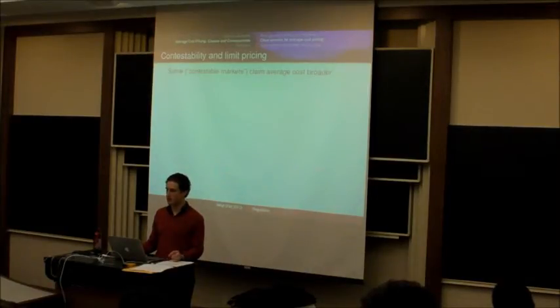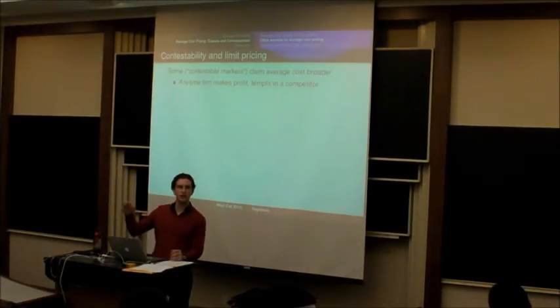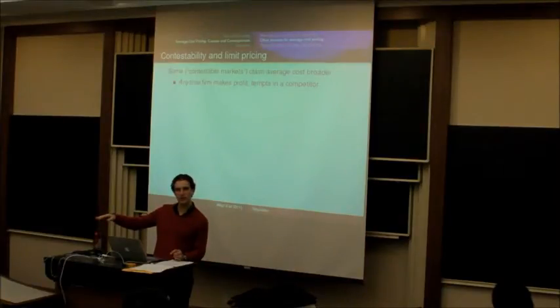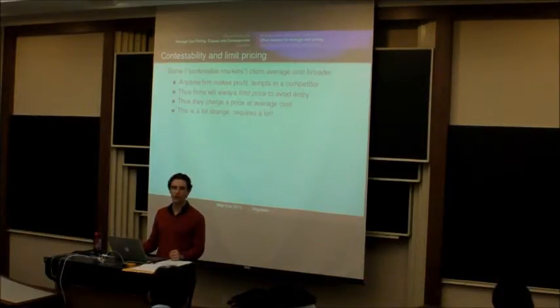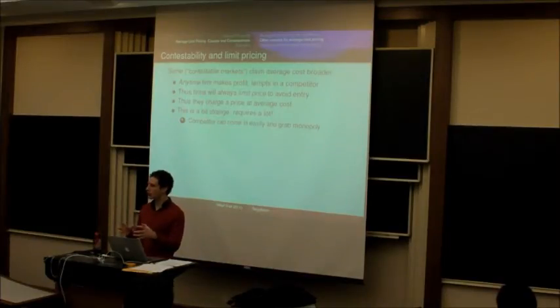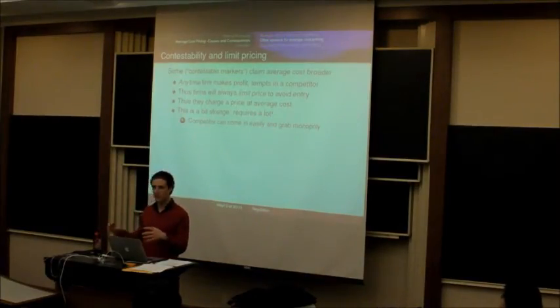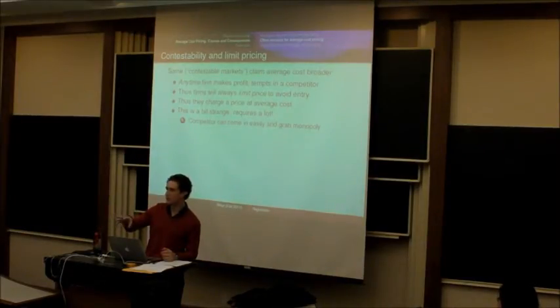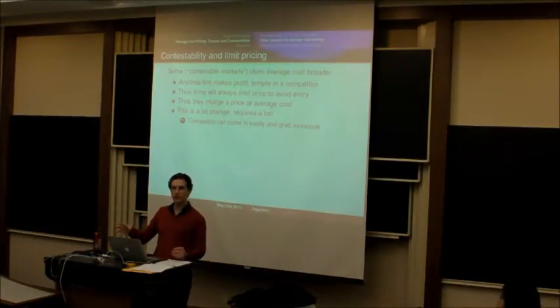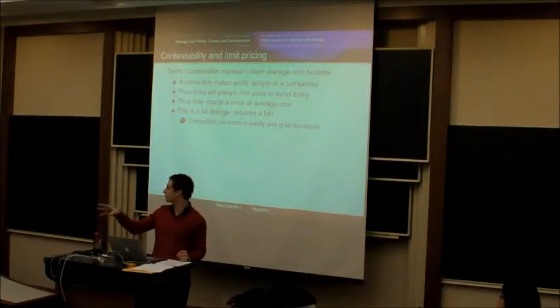Some, and I think this is a little bit of a crazy claim, but some have even claimed that without multiple firms trying to get into the industry, there can still be average cost pricing. Because any time a firm makes a profit, even if no other firm actually comes into the industry, the firm is so afraid of someone else coming in that they hold their prices down near the point where they're hardly making any profits, so as not to attract anyone else in. This is called limit pricing, and this theory is called the theory of contestable markets, or contestability. This is a bit strange, because it basically requires that the firm is so afraid of a competitor that they think the competitor could come in, grab their monopoly position, and make all the profits that the monopoly was making, without being forced to face the competition from you.